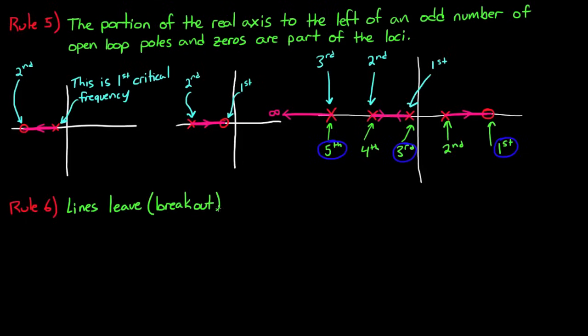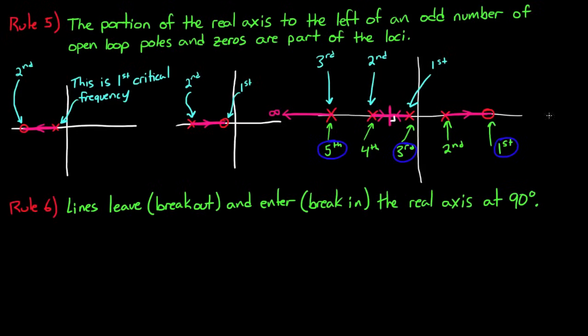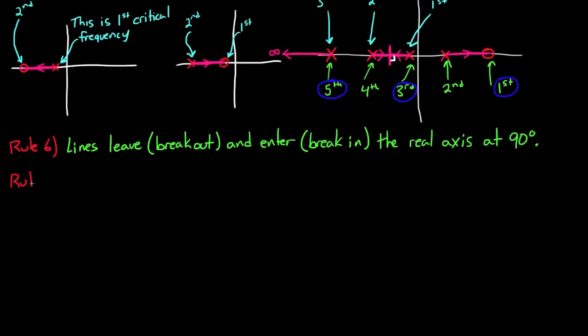So you can see in that one case above, sometimes the roots come together and crash into each other and need to leave the real line in order to go search for an open loop zero. So rule six is kind of a simple rule that just explains how the roots leave and enter the real line. And they do this at perpendicular angles, or 90 degrees to the real line.